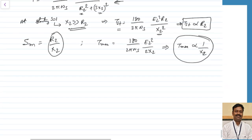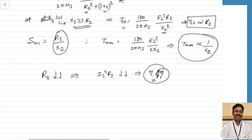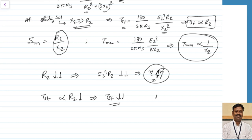Let us summarize the requirements. If the value of resistance is less, the advantage is that under running conditions the value of I2²·R2 is less — meaning rotor copper losses are less, so efficiency will improve. The disadvantage of keeping a lower resistance is at the time of starting: TST is proportional to R2, so as R2 is less, the starting torque is decreased. By keeping a lesser value of resistance, it will have good running characteristics but poor starting characteristics.